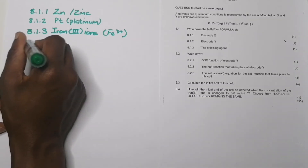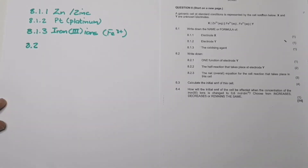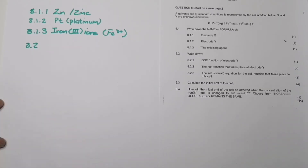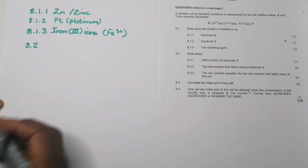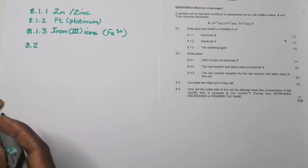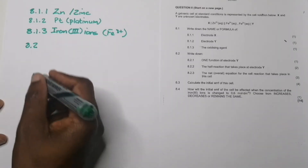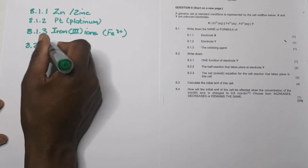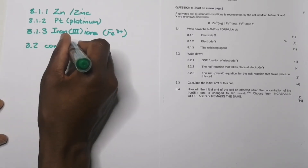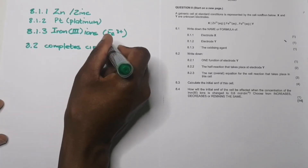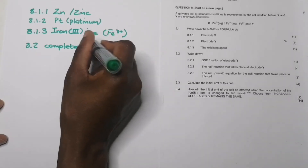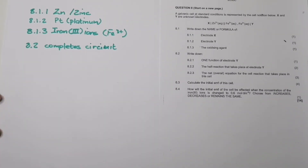For the function of electrode Y, we can say it completes the circuit, or that it conducts and assists in conducting electricity. So the answer is: it completes the circuit, or alternatively, it ensures electrical connectivity.